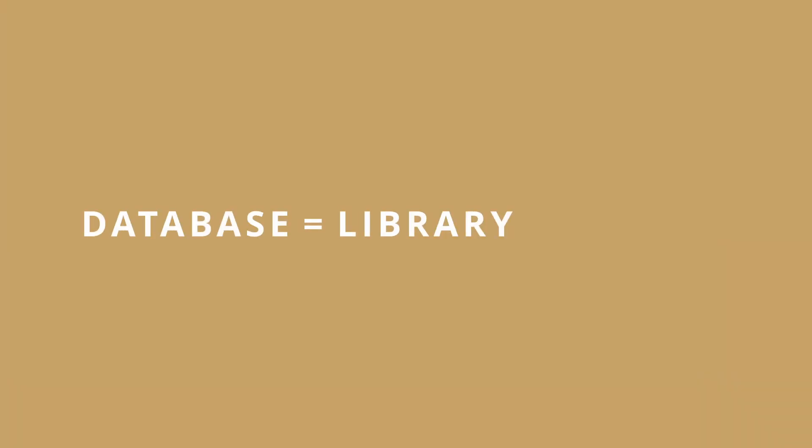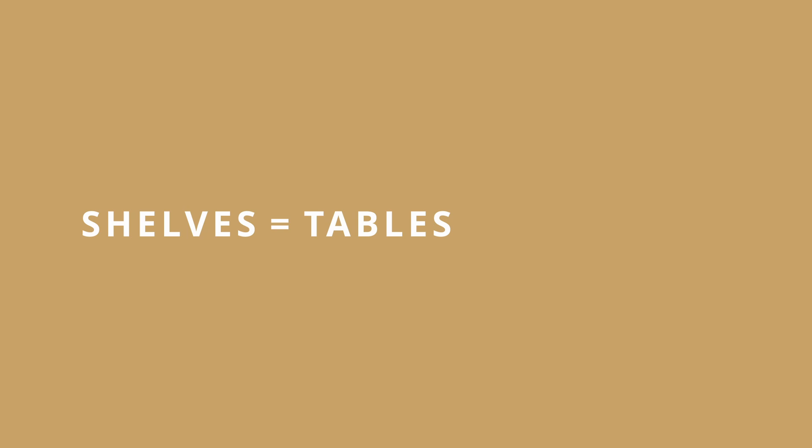A library is a place where books are kept. In this example, we can say database equals library. In a library, books are not just stacked randomly — they are arranged orderly in shelves. Shelves are made of rows and columns, so we can say shelves equals tables. And finally, books are stored in shelves, so book equals data. We've substituted the knowledge we're trying to acquire with existing knowledge we already have to make what we're learning stick.